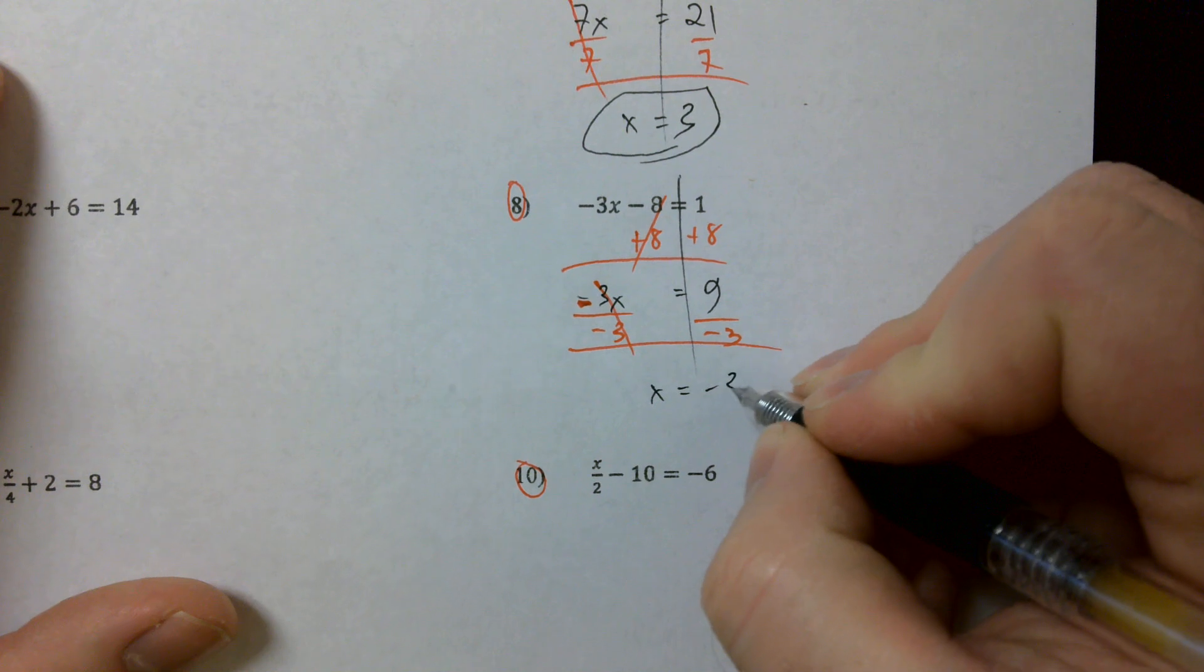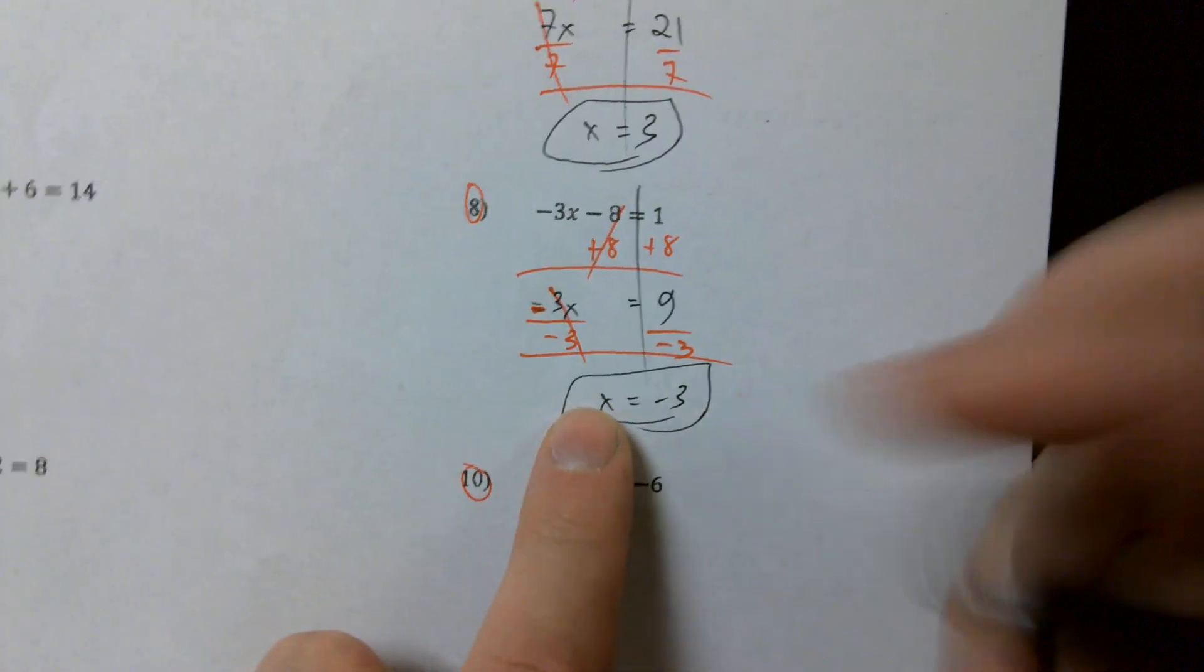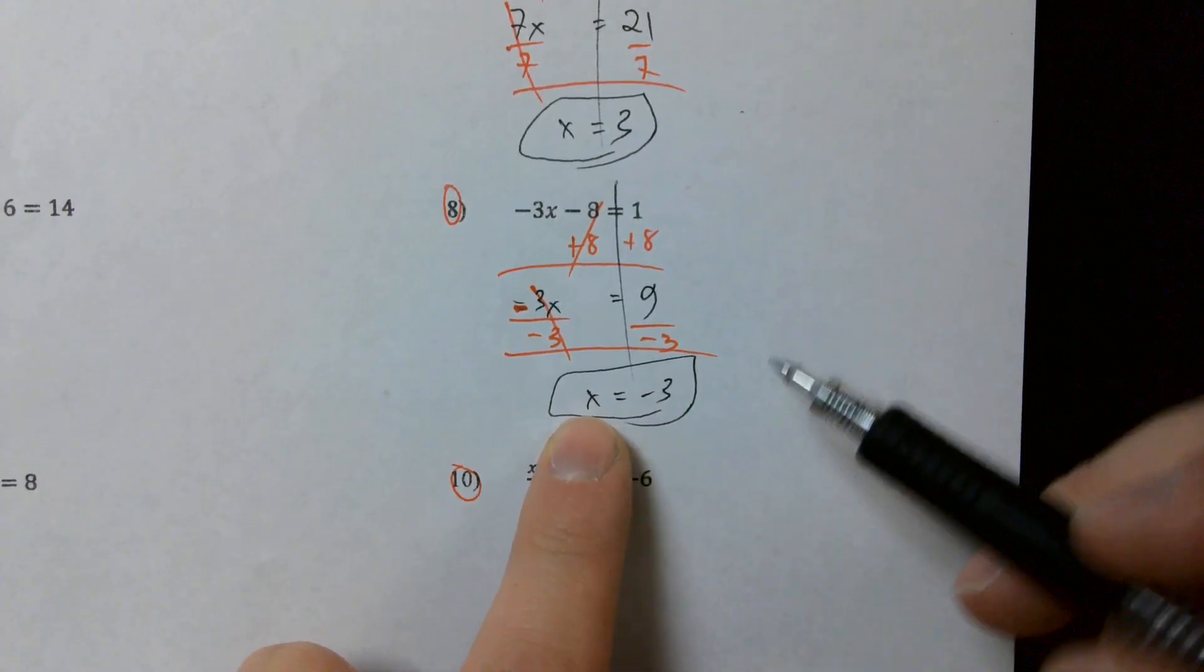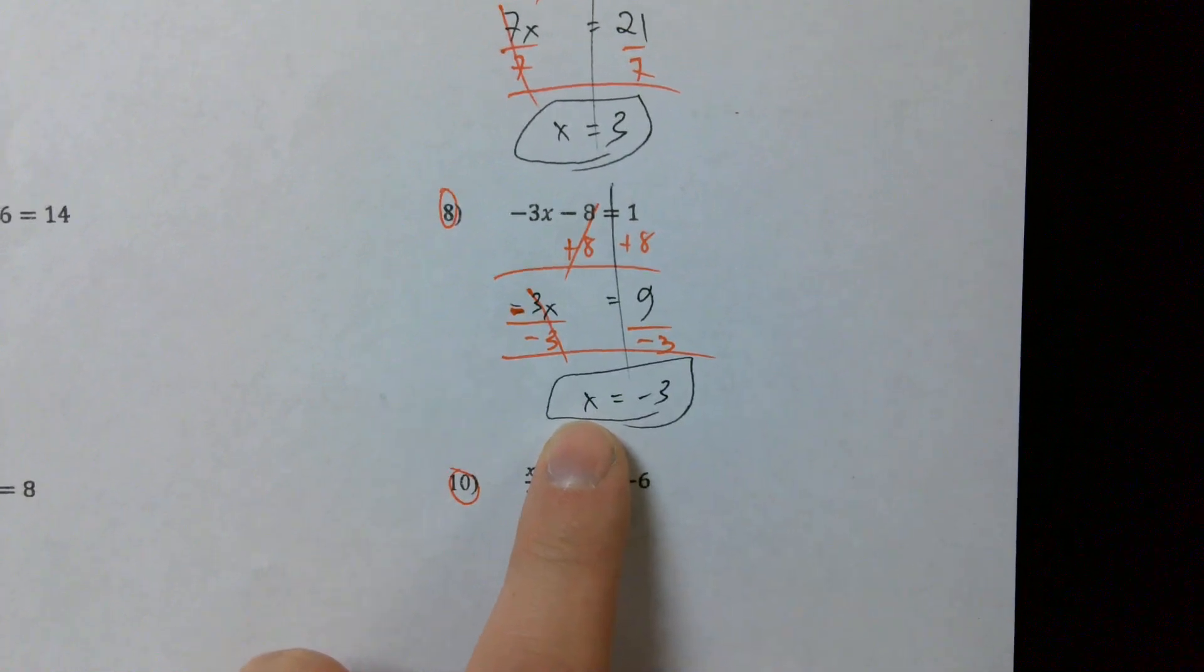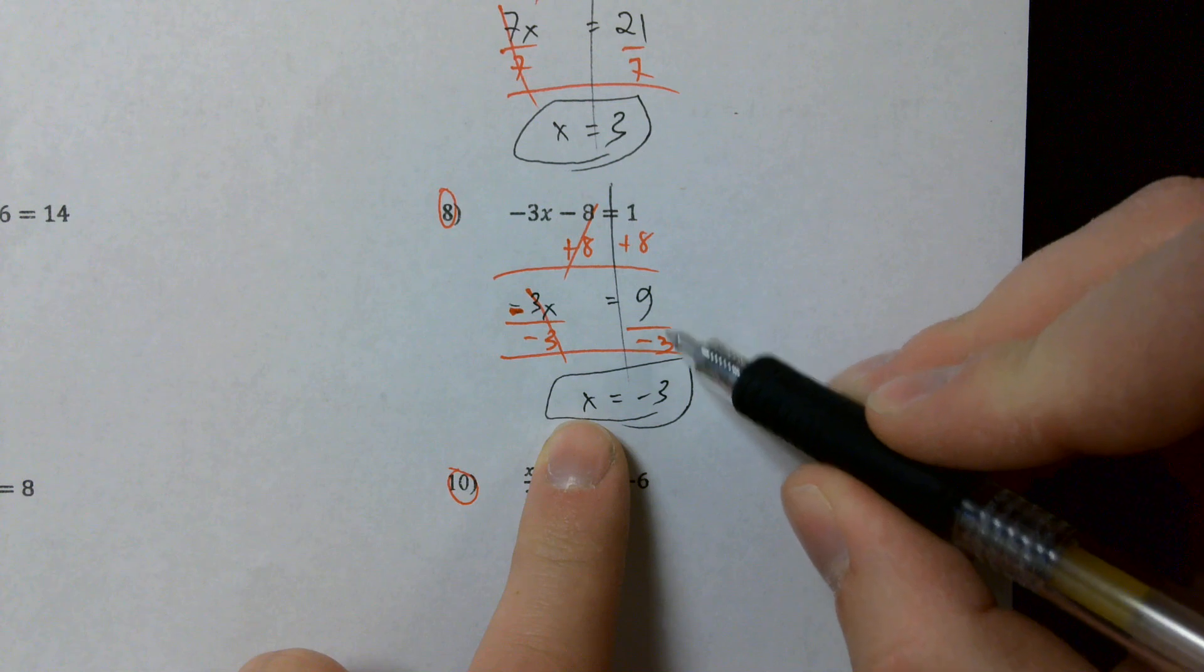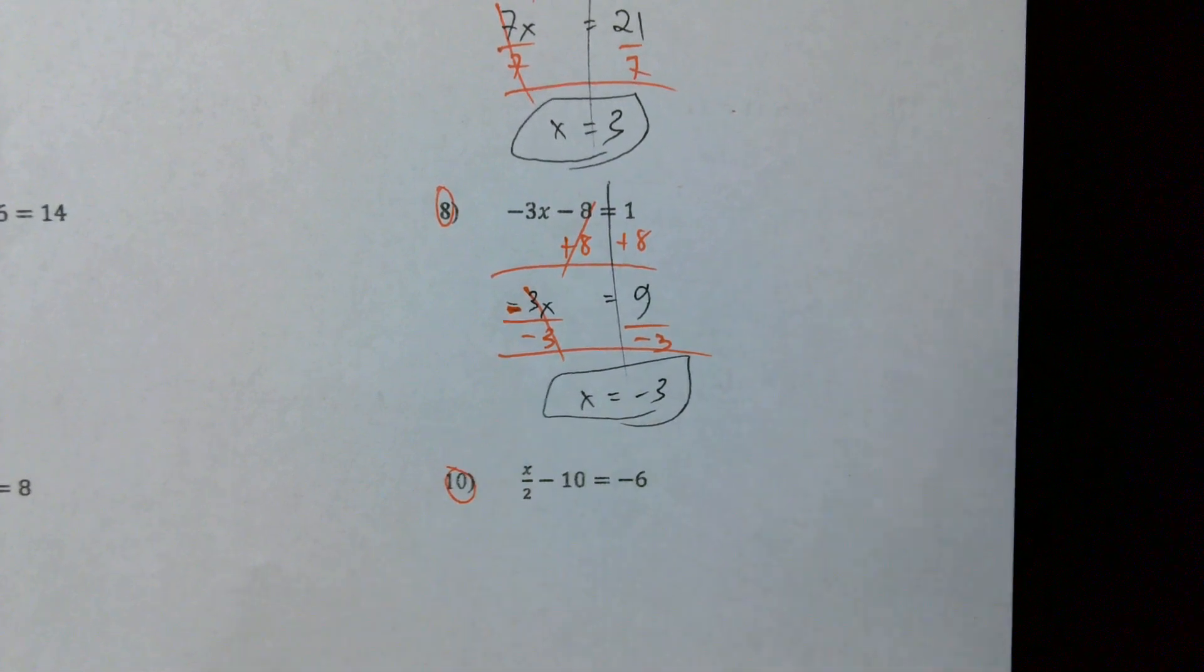And x equals negative three. Why is my x equal to negative three and not just three? Exactly right, positive divided by negative that's going to give me a negative.